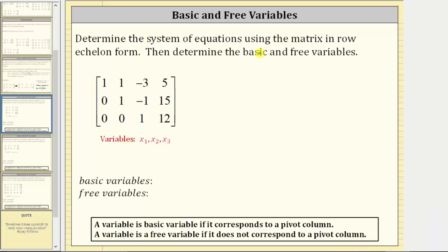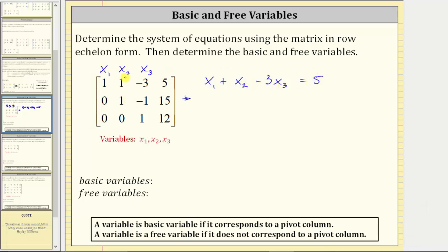Let's look at more examples. Determine the system of equations using the matrix in row echelon form, then determine the basic and free variables. Assuming the variables are x₁, x₂, and x₃ corresponding to columns one, two, and three respectively: in row one we have x₁ + x₂ − 3x₃ = 5; in row two we have x₂ − x₃ = 15; and in row three we have x₃ = 12.